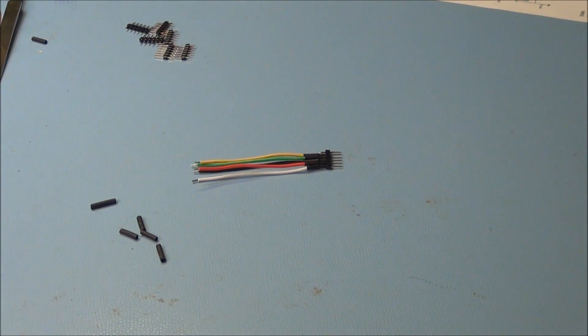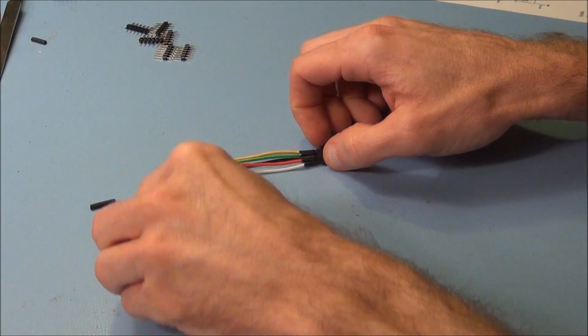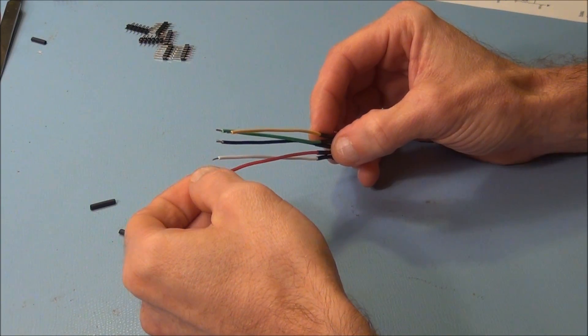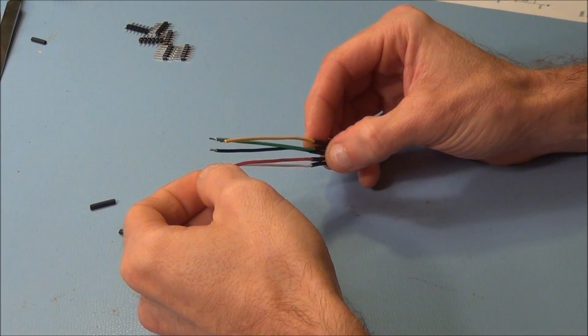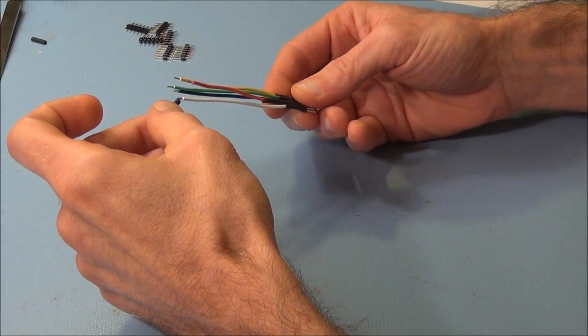And so now our critical next step, which we definitely don't want to forget before we solder the other half of our connector, is we want to put the remaining five pieces of heat shrink that we have, one on each wire. Then once we're done soldering the other end, we'll heat those down too.